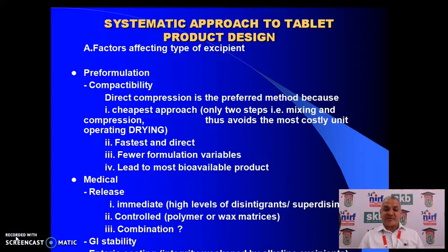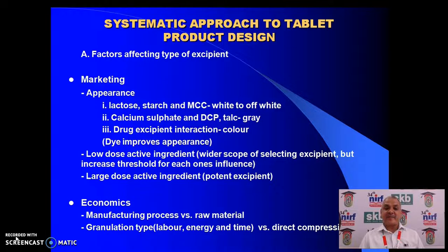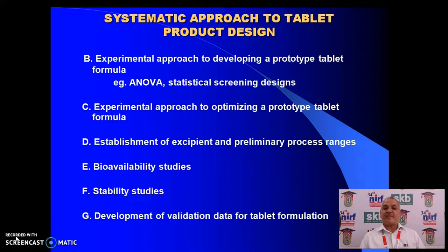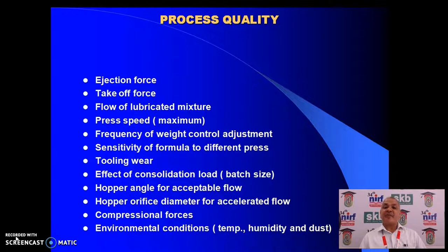Other considerations include medical factors such as release profile, gastrointestinal stability, and enteric coating. Marketing-related factors such as appearance are also important. Economics play a major role — manufacturing process versus raw material cost. Excipient designable properties are very important: moisture content, particle size, and polymorphic form. Another factor is the experimental approach to developing a prototype tablet formula using statistical design or quality by design, involving many steps. Process quality is also very important in tablet formulation and granulation.